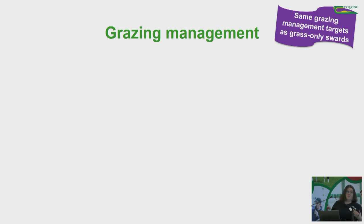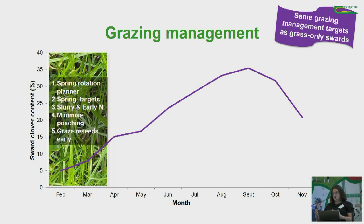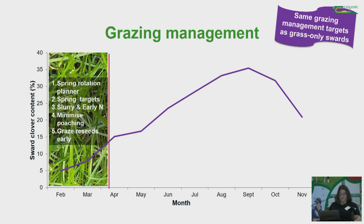Here's a graph showing the evolution of sward clover content across the year. We start with low clover content — around 5 percent in February — this increases through the year to a peak of 35–40 percent in September, then drops off again. In spring, clover is making a small contribution. To get the best from the clover sward: still use your spring rotation planner with targets of 30 percent grazed by end of February, 60 percent by St. Patrick's Day, and end first rotation in the first week of April. Get out your slurry and early nitrogen to feed the cows and grow the grass. Minimize poaching as it can damage stolons.